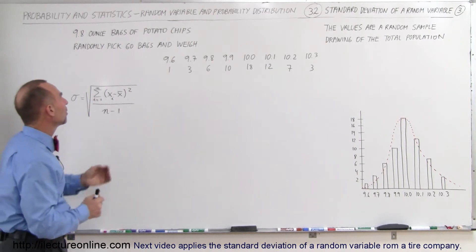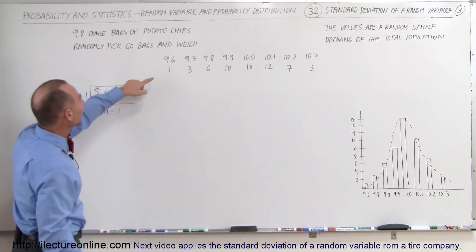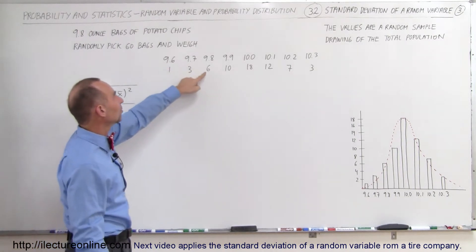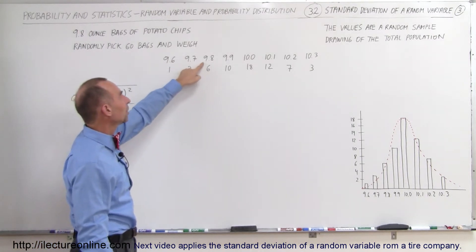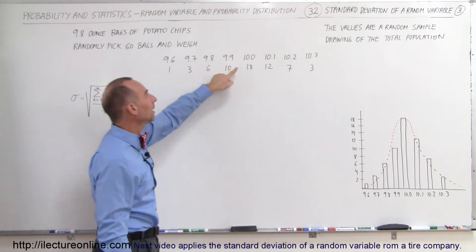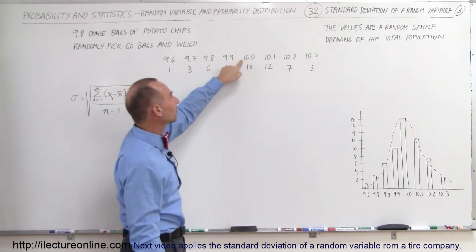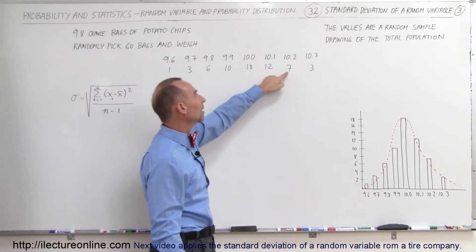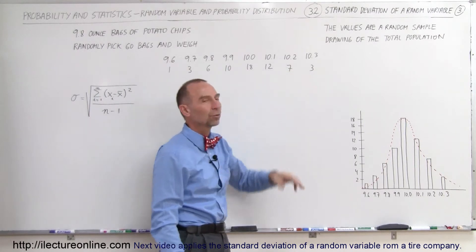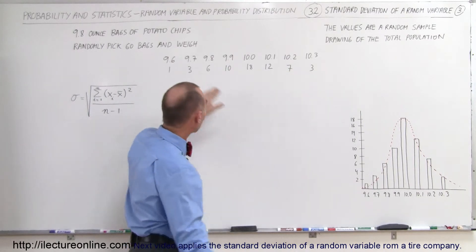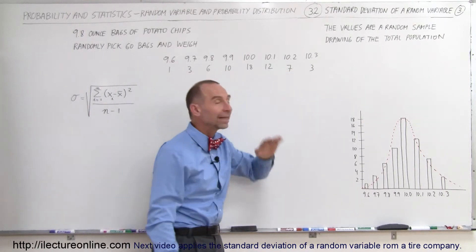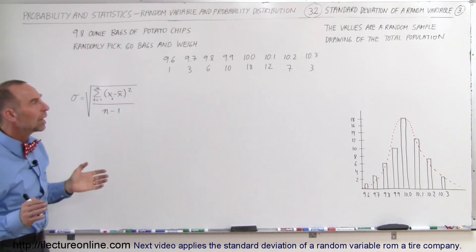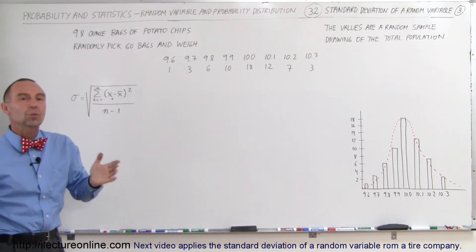We found that one bag had 9.6 ounces, 3 bags had 9.7, 6 bags had 9.8, 10 bags had 9.9, 18 bags had exactly 10, 12 bags had 10.1, 7 bags had 10.2, and 3 bags had 10.3. If you add all those counts together you get 60 bags total. Now we want to calculate the standard deviation.